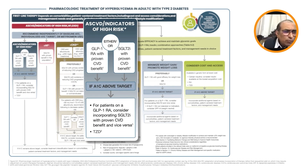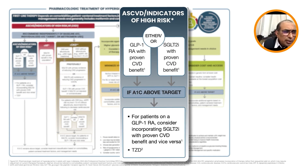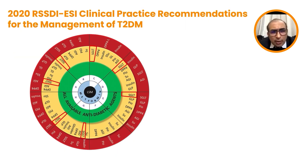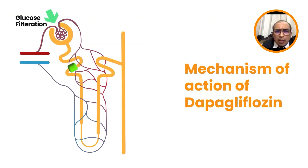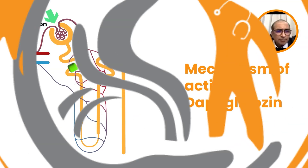When evaluating patients, look at the presence of atherosclerotic cardiovascular disease or renal disease, the age, and the BMI. The key drug classes to consider include SGLT-2 inhibitors, DPP-4 inhibitors, and sulfonylureas, among others.